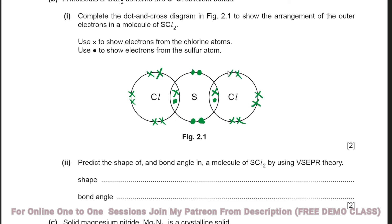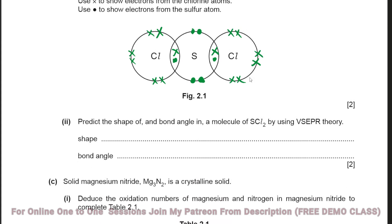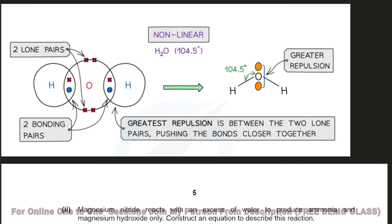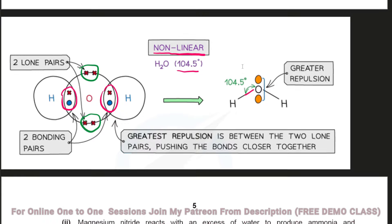A molecule of SCl2 contains S–Cl covalent bonds. For the dot-and-cross diagram: sulfur has 6 valence electrons — two lone pairs and two bonding pairs, one to each chlorine. Each chlorine also has its lone pairs shown. Using VSEPR theory, with two lone pairs and two bonding pairs, the lone pair–lone pair repulsion pushes the bonds closer together. The shape is non-linear (bent) and the bond angle is 104.5°.